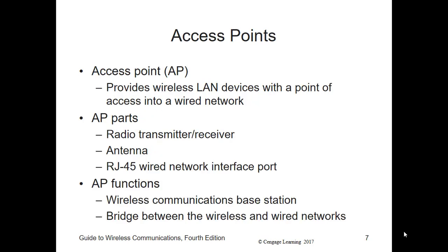Next is an access point. As you learned in Chapter 1, an AP provides wireless LAN devices with a point of access onto a wired network. An AP has three major parts: a transmitter and receiver — also called a transceiver — an antenna to radiate the signals, and an RJ45 wired network interface port used to connect the AP to the wired network itself.